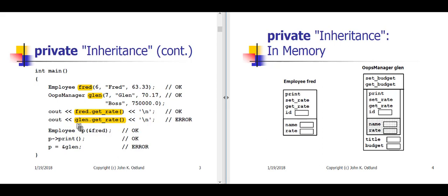Continuing in slide three, I can set up P as a pointer to an employee containing the address of Fred. Since Fred is an employee, saying p->print will invoke the employee print function displaying information about Fred. But because the inheritance for oopsManager is private rather than public, I'm no longer permitted to take the address of an oopsManager and store it into an employee pointer — that is also going to be flagged as an error. Most of the time, private inheritance is probably created by mistake by simply forgetting to use the public keyword when specifying the base class.